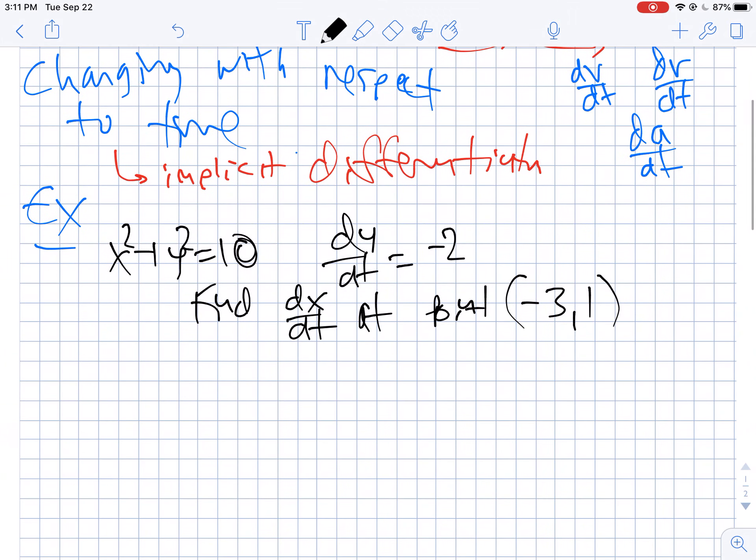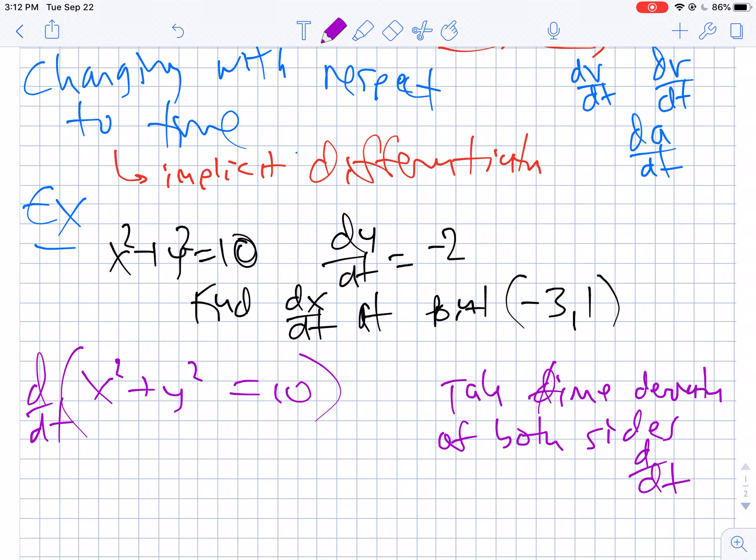So what you're going to do with a problem like this is start with x² + y² = 10 and take the time derivative of both sides. You're doing implicit differentiation, but not with respect to x, you're doing it with respect to t. t is our variable, so you're going to need a dx/dt and a dy/dt for every other variable you have.